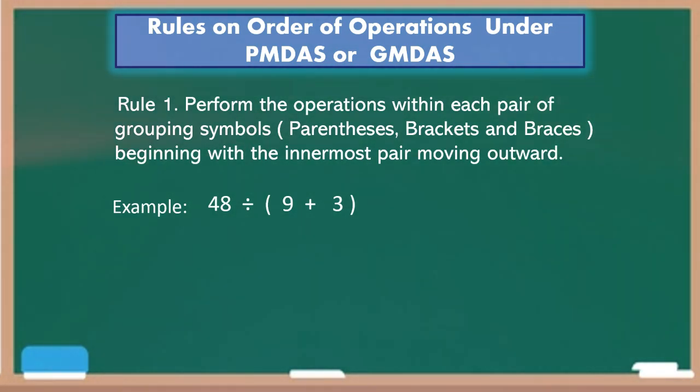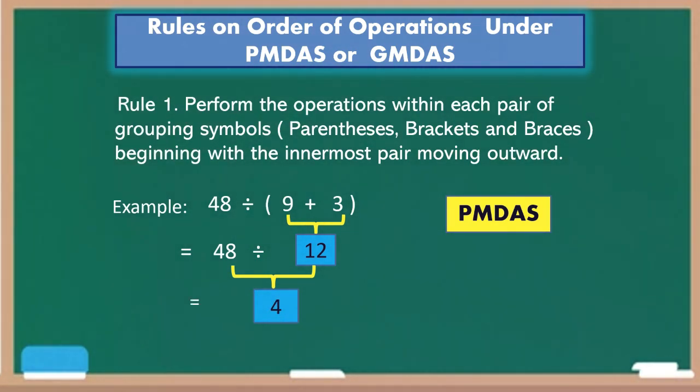So if it contains parentheses, our series of operations is what you call PEMDAS. Yes, we have two operations here: addition and division. Which one are you going to solve first? Yes, you are going to solve first the operation inside the parentheses. Okay, let's have now 9 plus 3, you have? Very good, 12. Bring down 48. 48 divided by 12, you have? 4. The final answer is 4.